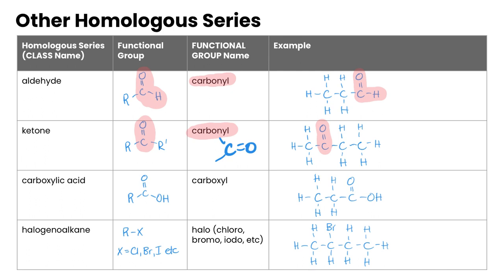Next up, carboxylic acid — it looks similar to the ones above. We have a C double-bonded to O, but then it has an OH attached to it and an alkyl group on the other side. Its functional group name is carboxyl, and you can see in our example at the end of the chain the C double-bonded to O, bonded to an OH, with another alkyl group attached.